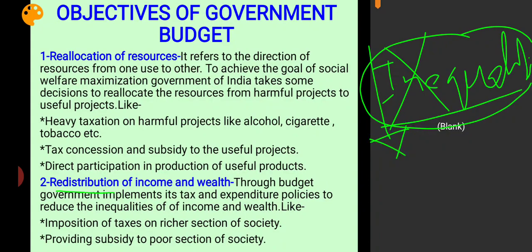Through the budget, government implements its tax and expenditure policy to reduce the inequalities of income and wealth. Tax means the government collects taxes from the public, and expenditure means government spending on different policies, programs, infrastructure development, etc. These are the two tools used through budget to redistribute income and wealth.